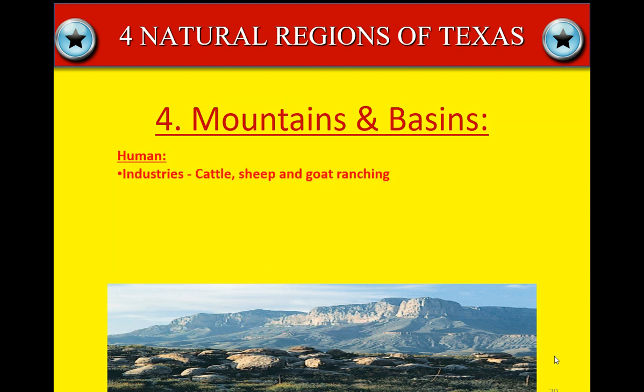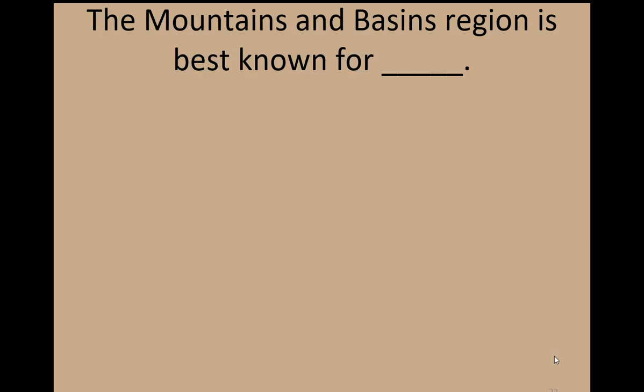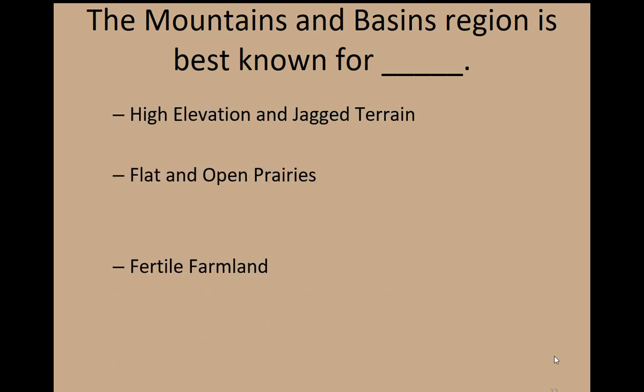The human geography of the mountains and basins region: cattle, sheep, and goat ranching is big out in that region. Big Bend National Park is a major tourist draw — it's beautiful country down there. Here's a picture from Big Bend National Park. What region is this formation in? The mountains and basins region, of course. The mountains and basins region is best known for high elevation and jagged terrain — not fertile farmland or flat open prairies — and you are correct if you said high elevation and jagged terrain.